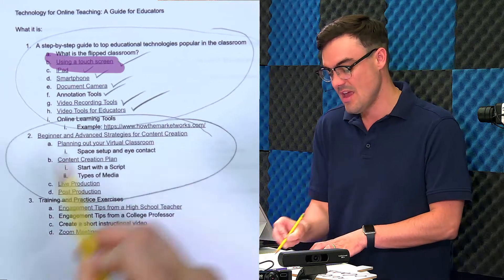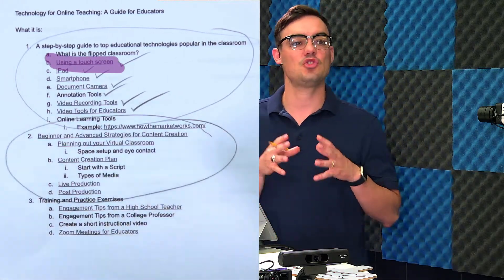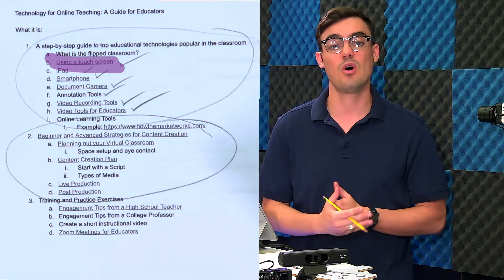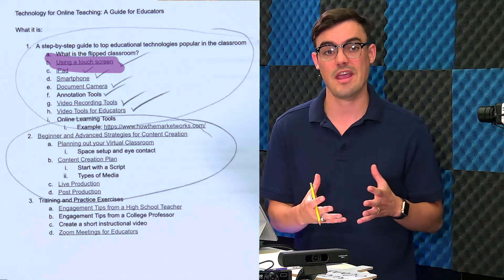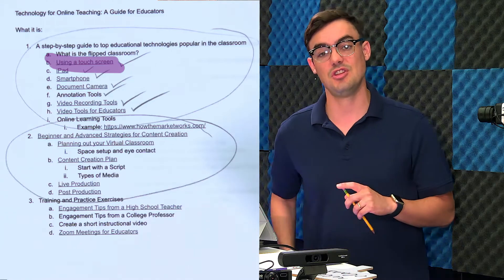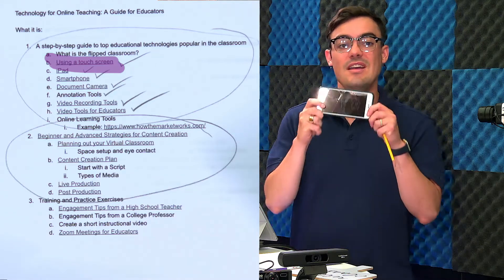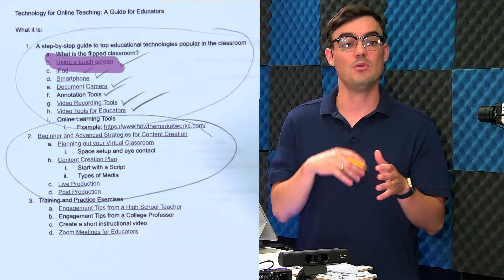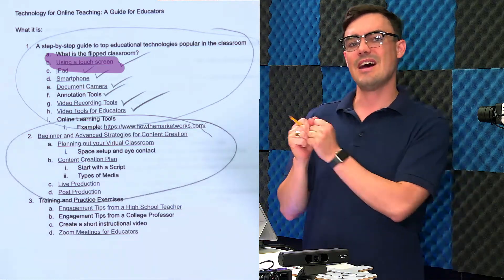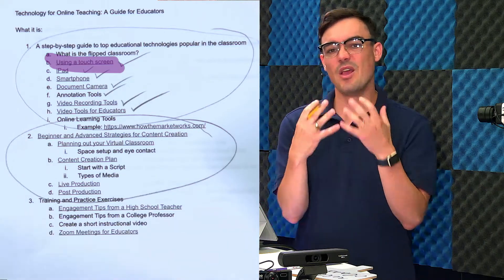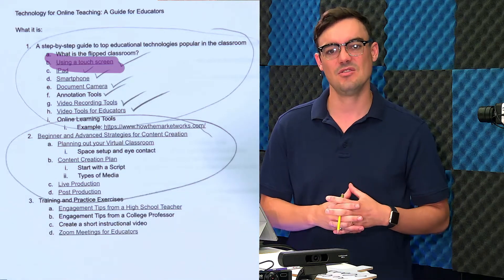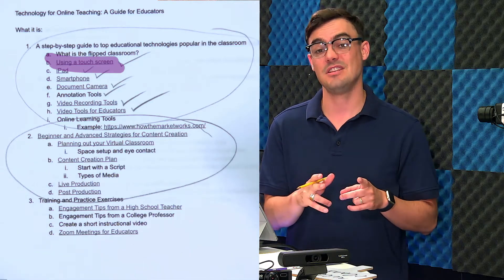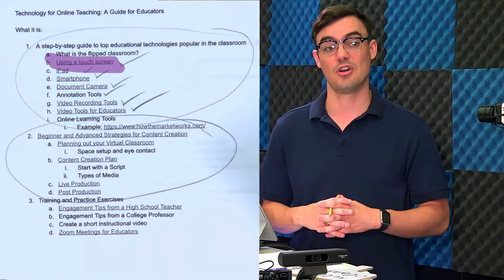When we get to number two — beginning and advanced strategies for content creation — as a teacher, we need to start rethinking our role as a content creator. What I want to challenge you to do: take pictures with your phone, short video clips with your phone. Maybe you have a GoPro — start using it more, downloading it onto your computer and incorporating it into the videos you create for your online courses. It's really going to be fun, and I have teachers who've been telling me it really changes the game for learning.